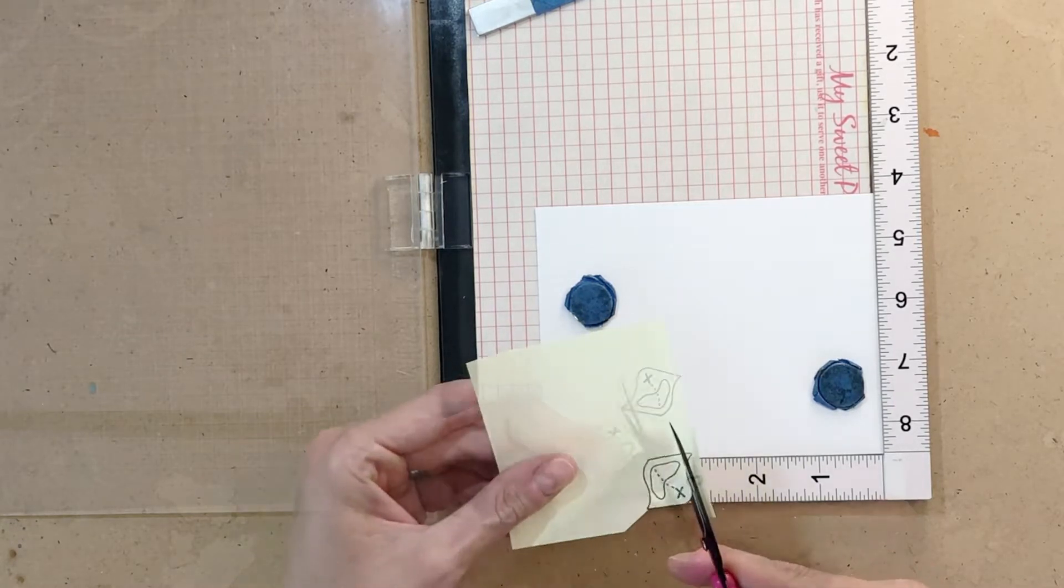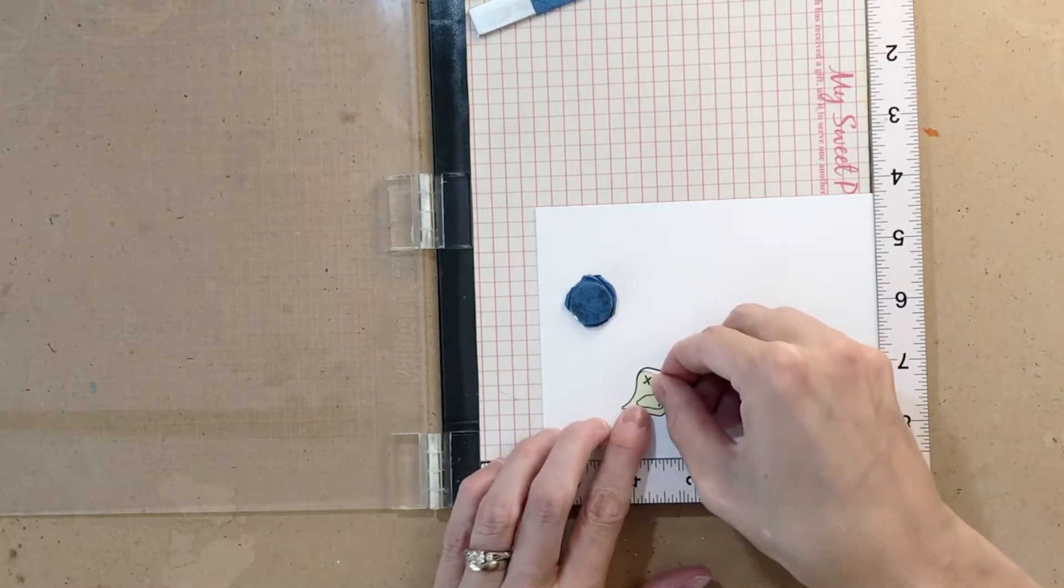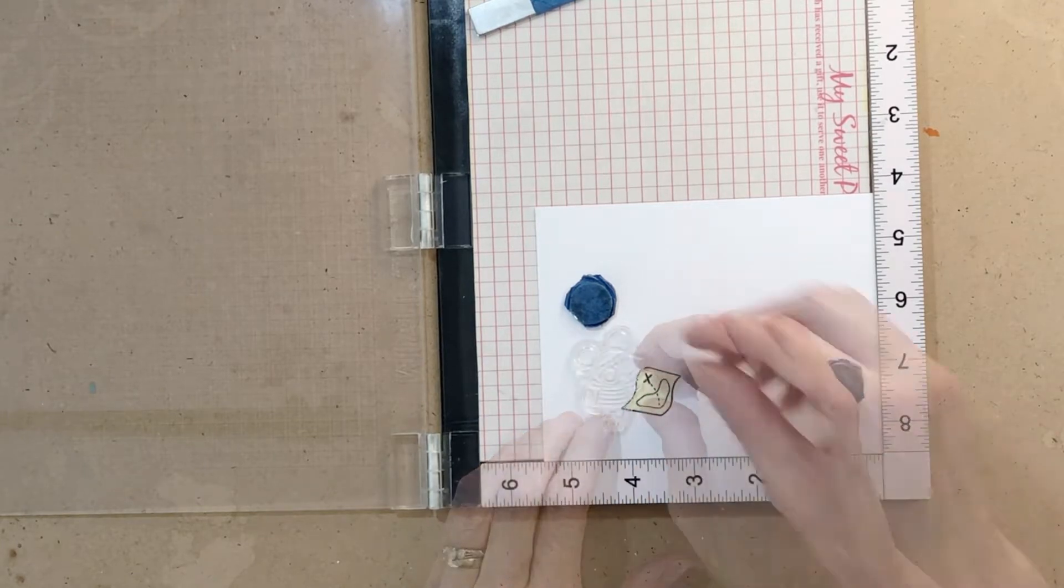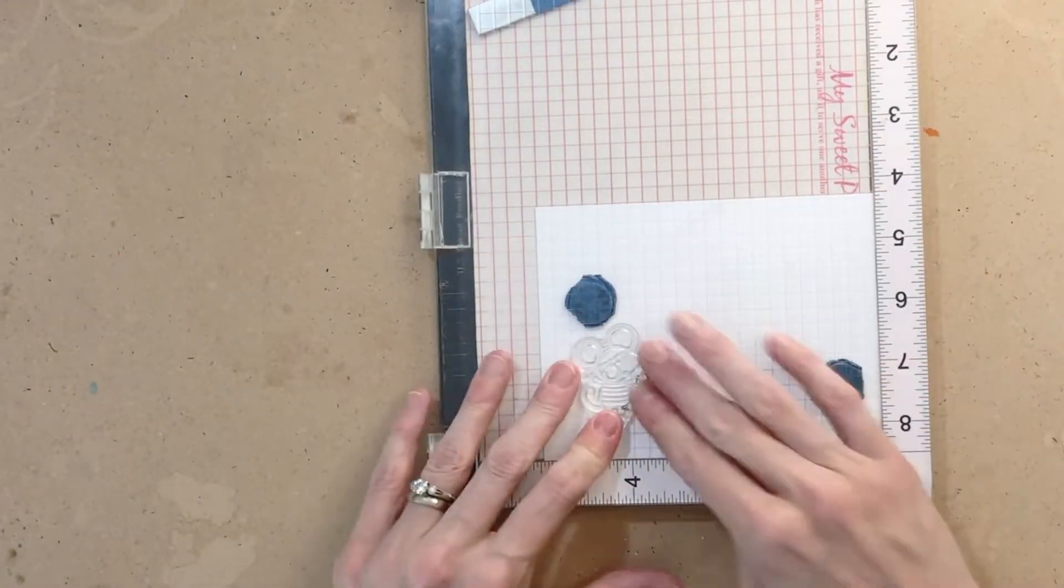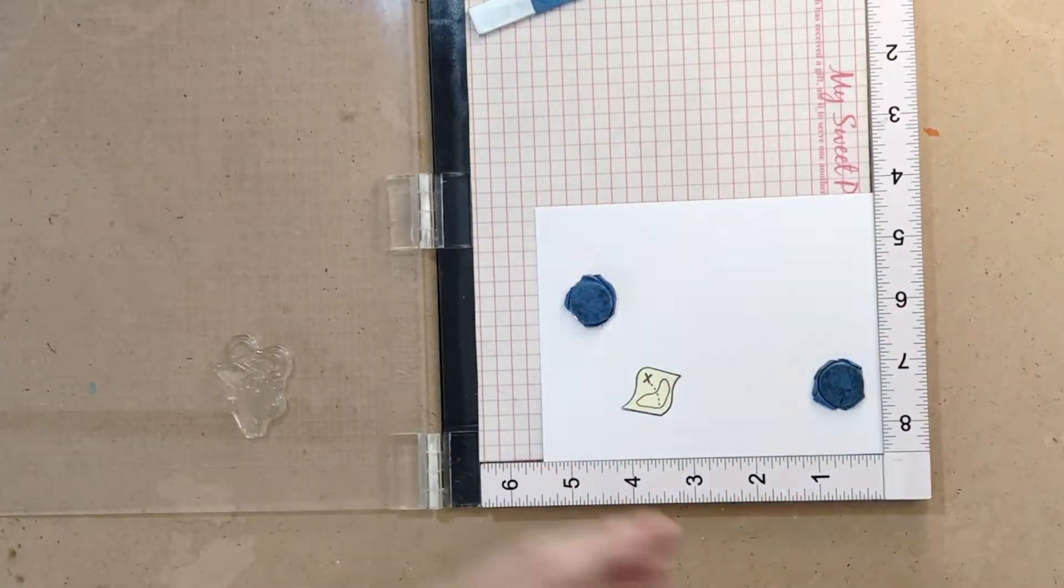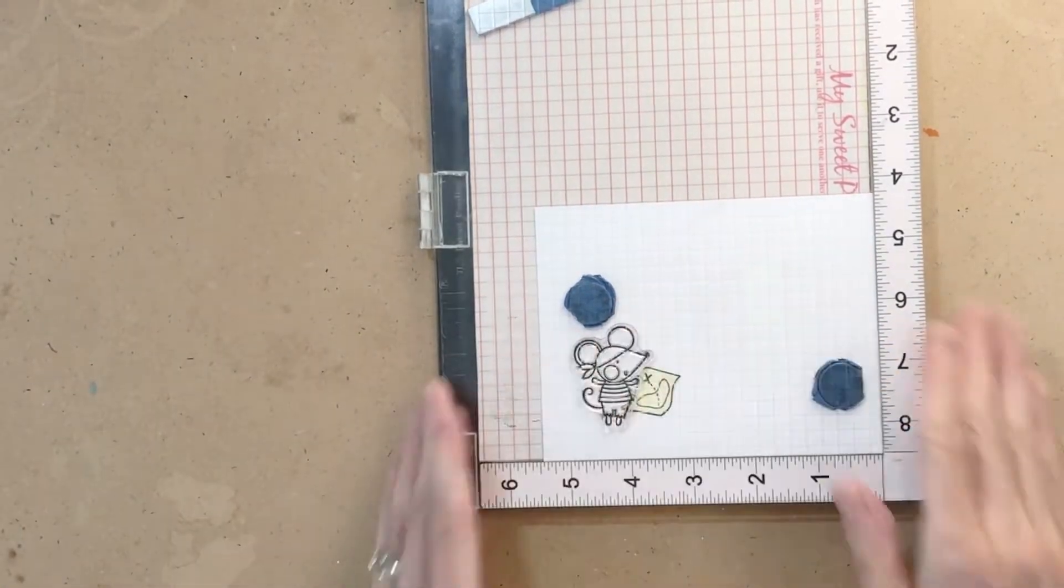Then I quickly made a mask by stamping the map on a post-it note, then fussy cut it out and now I'm placing it right over my stamped map. Then I'll grab my mouse here, position him so it looks like he's holding that map, and then ink him up and stamp him in Tuxedo Black as well.